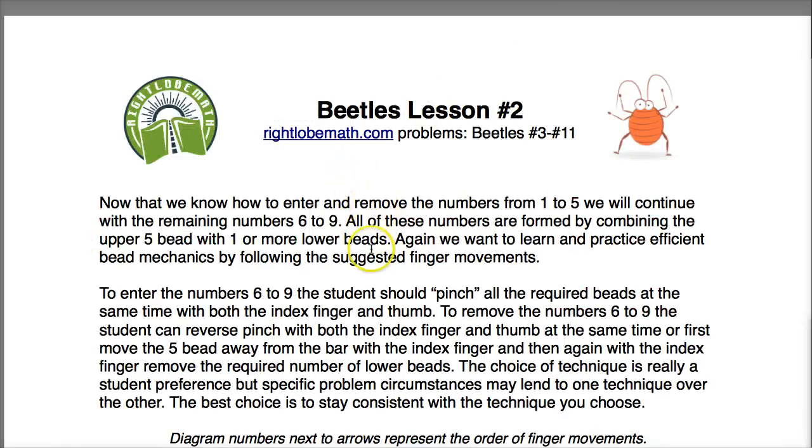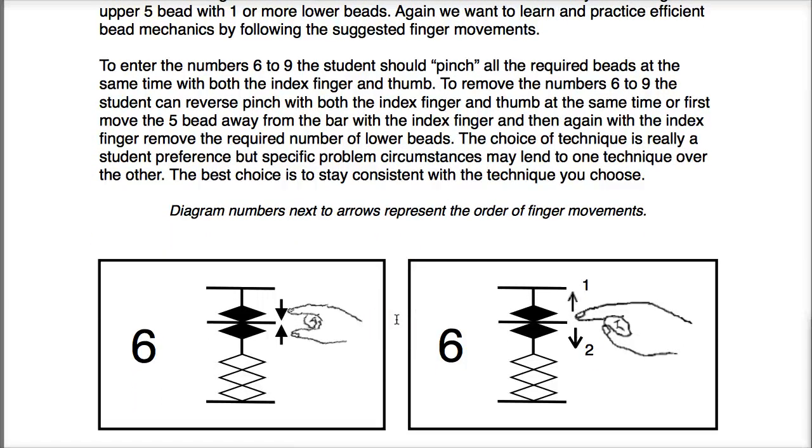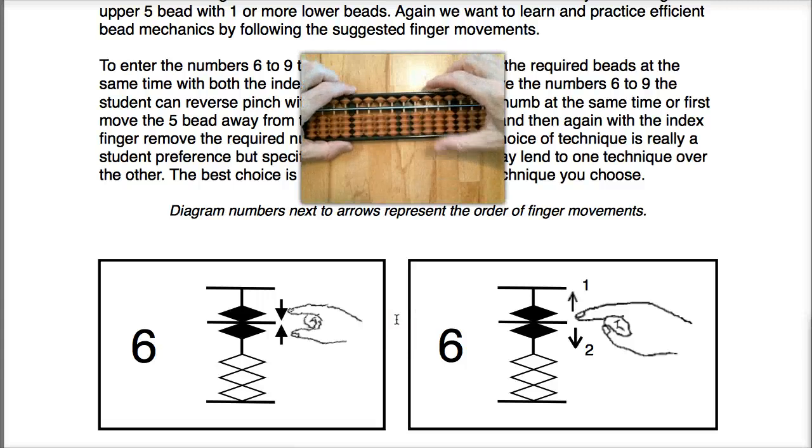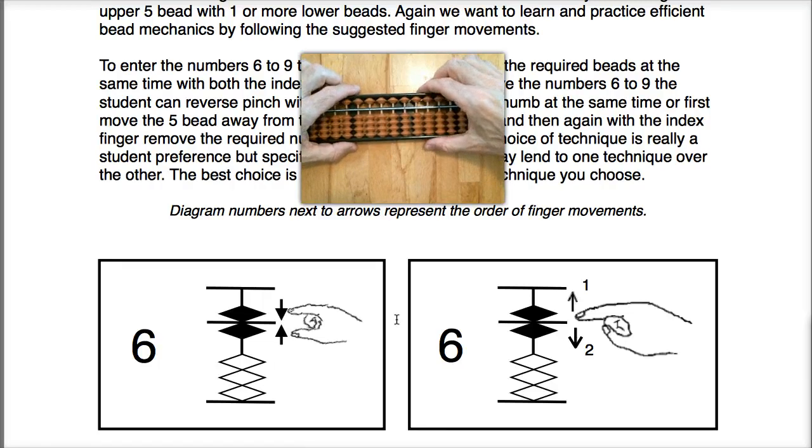So jumping right into the discussion, we're going to look at inputting the numbers six through nine. First, taking a look at the number six, we can enter a six simply by pinching with our thumb and index finger. We can remove the six by reverse pinching using the thumb and index finger at the same time, or we could just use our index finger to move the five away and then the one away. And that's just a matter of choice and probably some problem circumstances may dictate one way or the other to be more efficient.